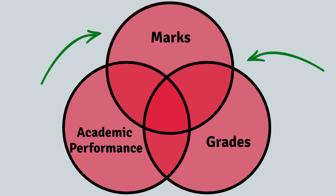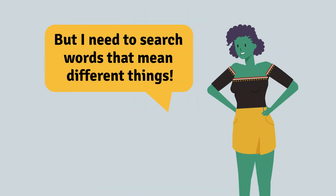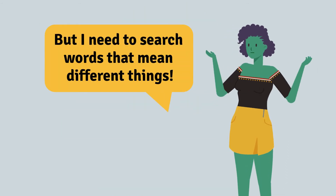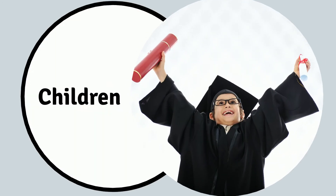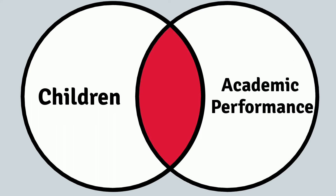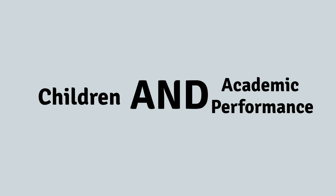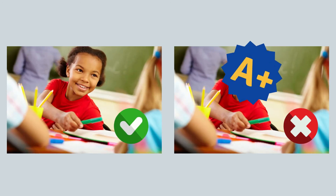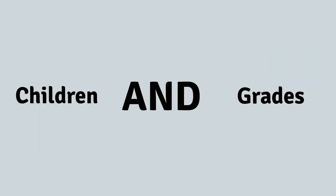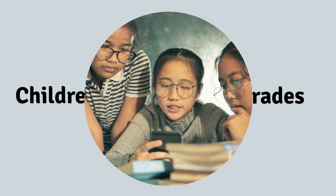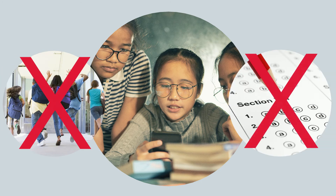Every time we add another word using OR, the red area gets bigger and we find more sources. But what if we want to combine words that mean different things? Suppose you're researching children's academic performance — we want research about both children and academic performance. We use AND to connect different concepts. This search will find sources that use the word 'children' and the word 'grades', but not sources just about children or just about grades.